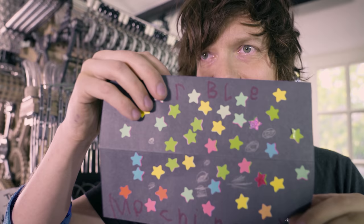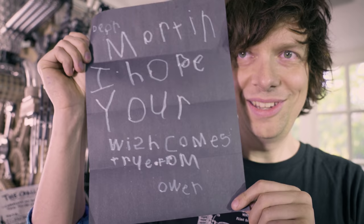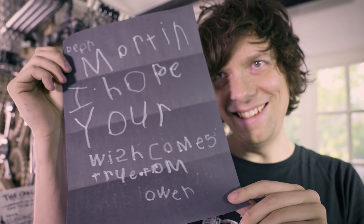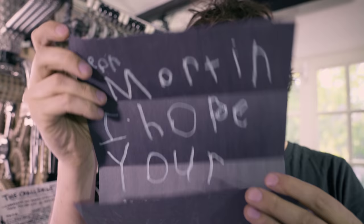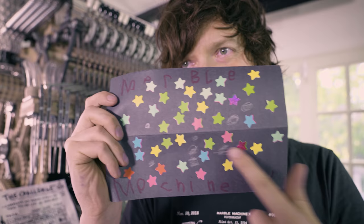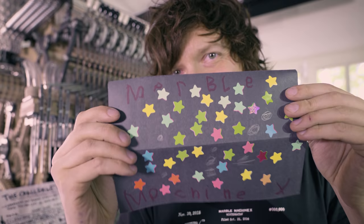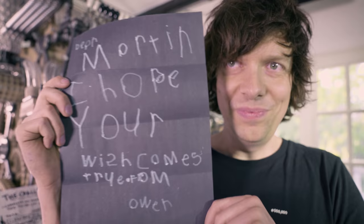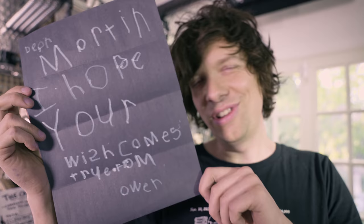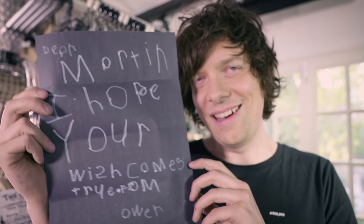Check this out. Marble Machine. Dear Martin, I hope your wish comes true from Owen. When I saw this I was really, really touched. I've heard that Owen made the star constellation of the Marble Machine, and that these white things are marbles going through the universe. It meant so much to me Owen that you told me this. Thank you so much. I want to wish you good luck with everything you do. Remember that you can do more than you think, but you have to work hard. I'm not gonna give up on the Marble Machine X, Owen.